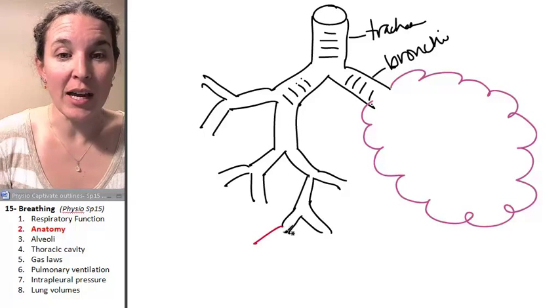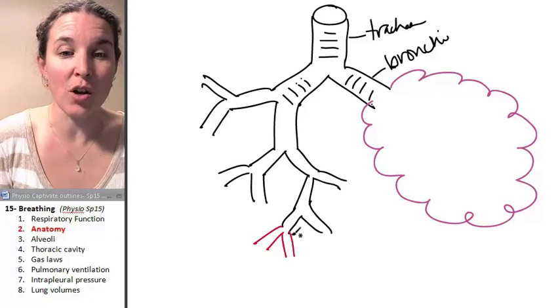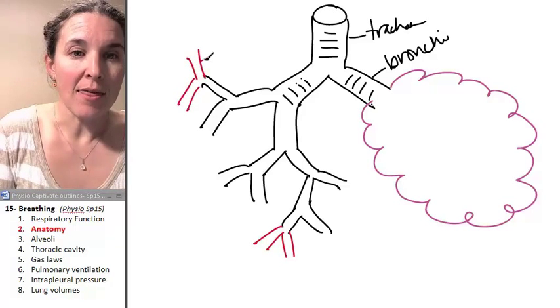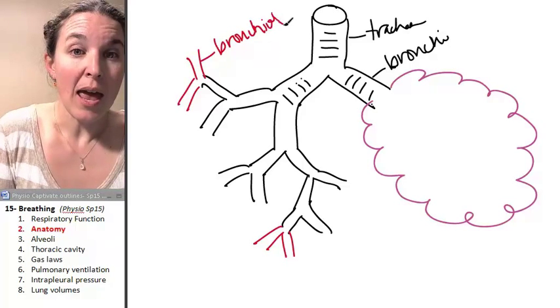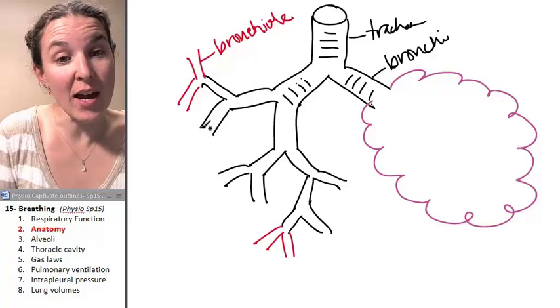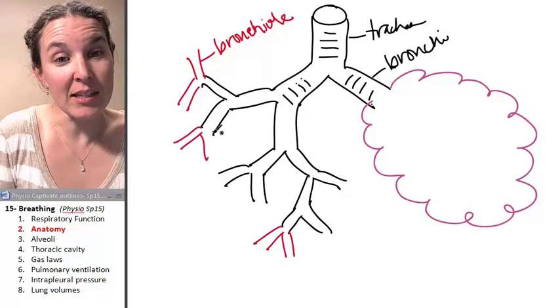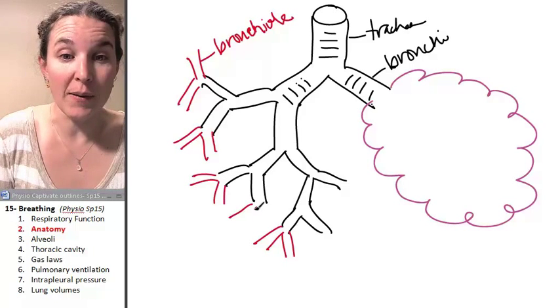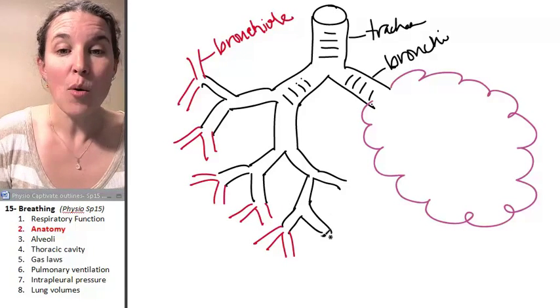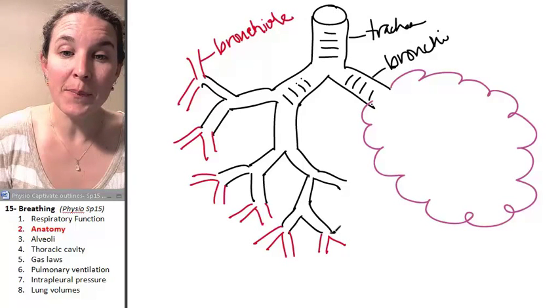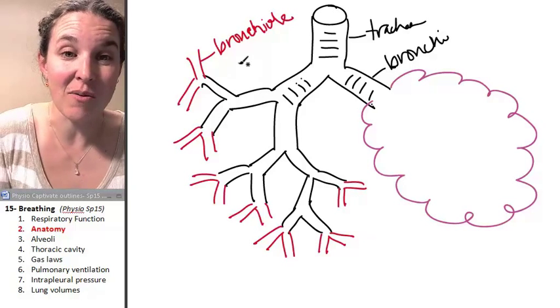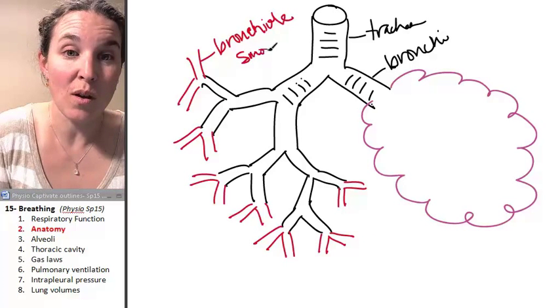Eventually, bronchi bifurcate into structures called bronchioles. I'm going to draw a couple of them up here. This right here is a bronchiole. I've drawn them in red to indicate that they're different. They're structurally different from the bronchi and from the trachea. Bronchioles are not surrounded in cartilage. They are surrounded in smooth muscle.